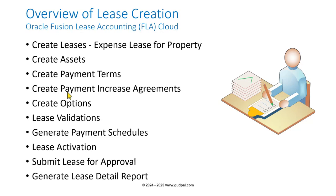In lease validation, the system basically checks all the data entry we have made — whether it's correct, or if there are any issues, it's going to give us warnings or errors before we correct them. We validate again before the system okays the validation and sets the status as validated. Then I will generate the payment schedules, have a look at those schedules, and then activate the lease before submitting it for approval.